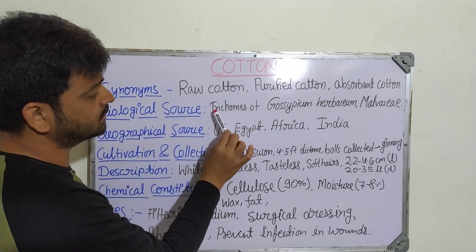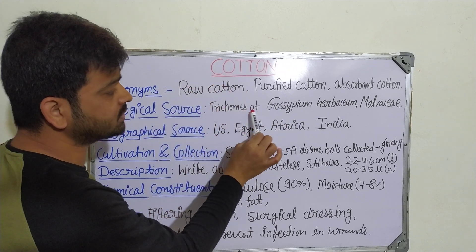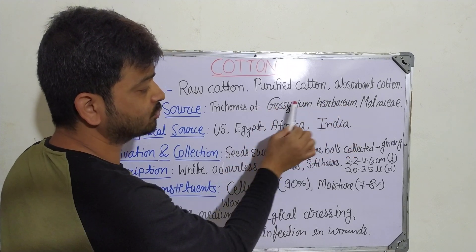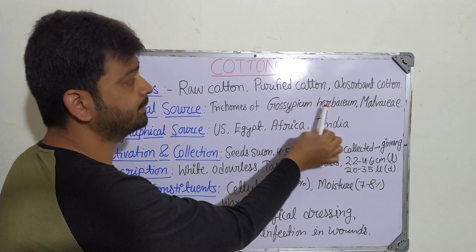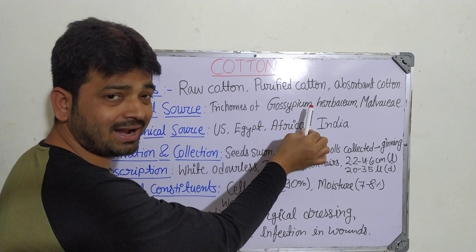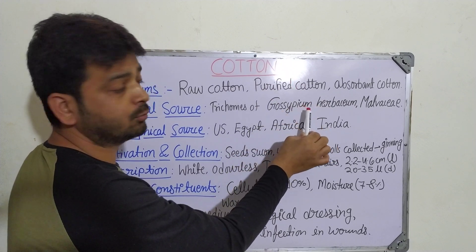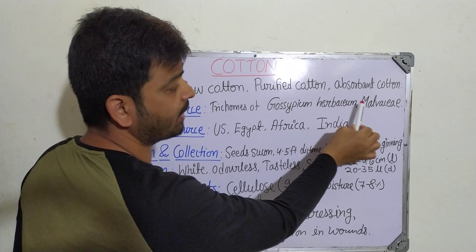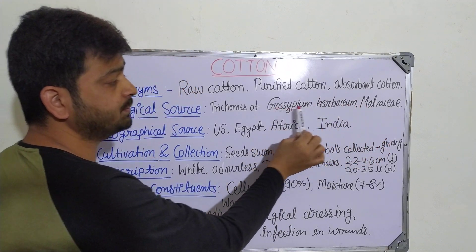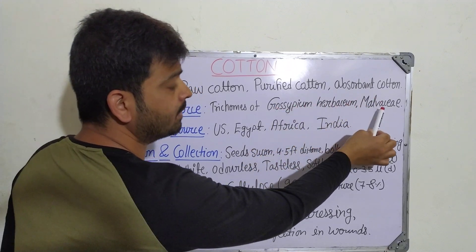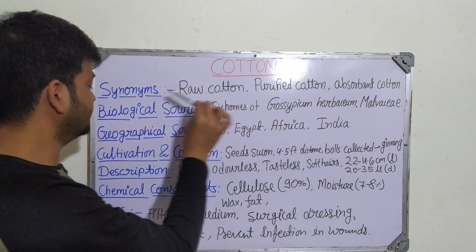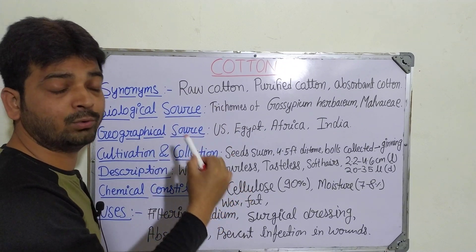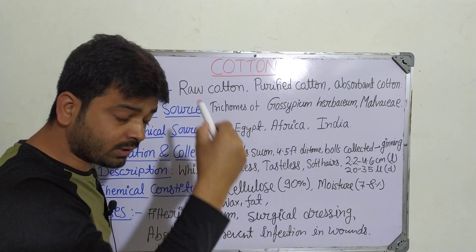Coming to the biological source, it is the trichomes of Gossypium herbaceum. This is the scientific/botanical name of the cotton plant, which must be mentioned in the biological source. It belongs to the family Malvaceae. So Gossypium herbaceum belongs to the family Malvaceae.